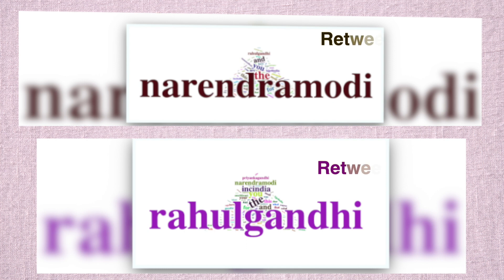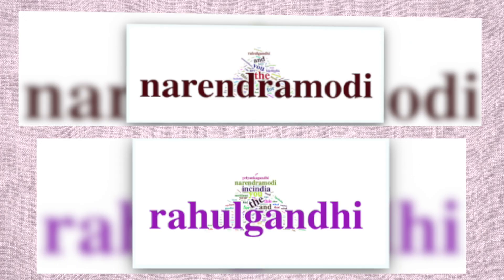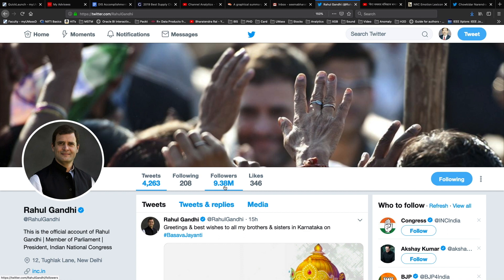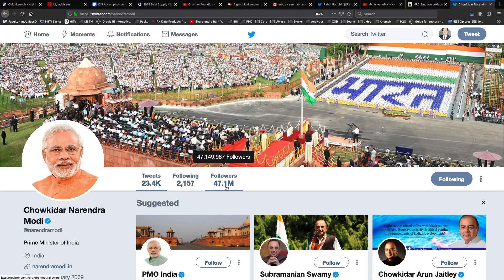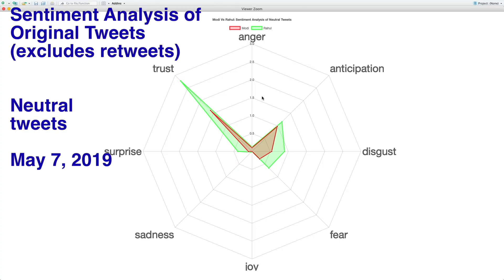One major difference that comes out is for Rahul Gandhi, there are 58% of tweets that were actually retweets, whereas for Narendra Modi we have about 76% tweets that are retweets. That may have something to do with the number of followers of each leader — currently about 9.4 million for Rahul Gandhi and about 47 million for Narendra Modi.